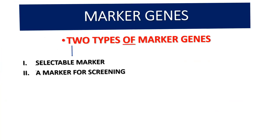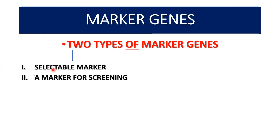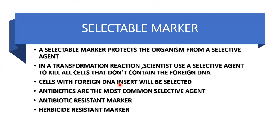Marker genes are of two types: selectable markers and markers for screening. A selectable marker — the best example is an antibiotic resistant gene. In a plasmid or vector, we insert our antibiotic resistant gene. That antibiotic resistance can be resistance to tetracycline, streptomycin, hygromycin, or erythromycin. So that gene can show resistance to any of these antibiotics.